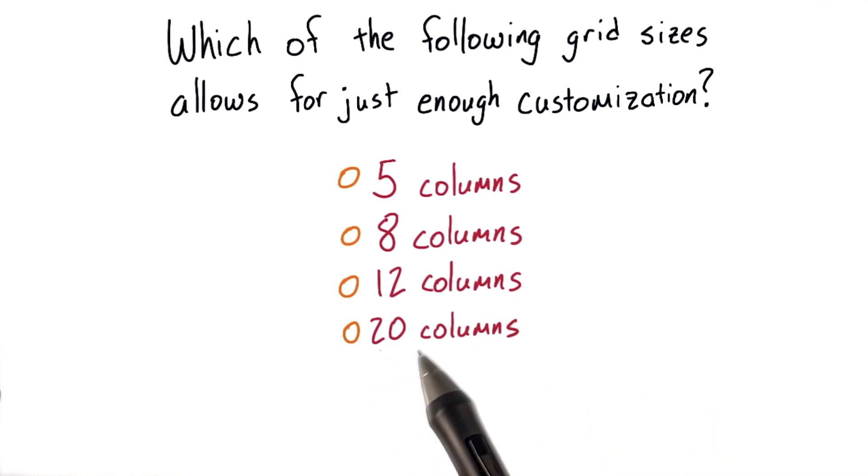But let's think about 20. With 20 columns, 3 doesn't divide into 20 evenly. So we know that we can't do 3 even columns on the screen.